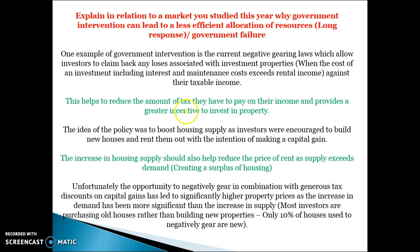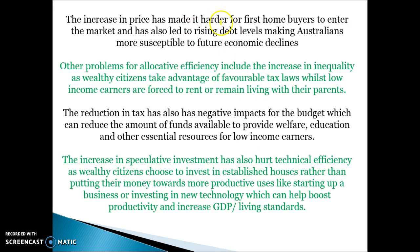To sum up this market for an exam question on why government intervention can lead to a less efficient allocation of resources: one example of government intervention is the current negative gearing laws, which allow investors to claim back losses associated with their investment property when costs such as interest exceed rental income. This helps reduce the tax they pay and provides a greater incentive to invest in property. The policy was intended to boost the supply of housing so investors could build and rent out apartments, reducing rent prices as supply exceeded demand. Unfortunately, negative gearing has led to people buying existing houses, increasing demand rather than supply. Most investors buy old houses and negatively gear them to make a profit, making it hard for first home buyers to enter the market and leading to rising debt levels.